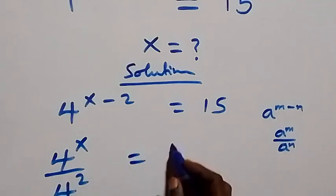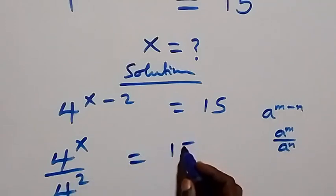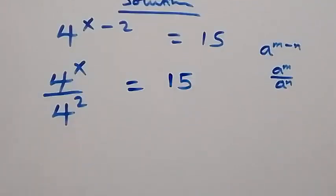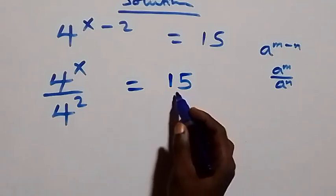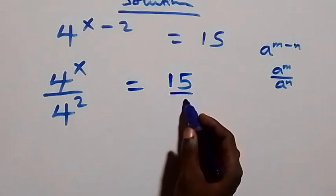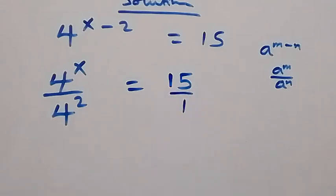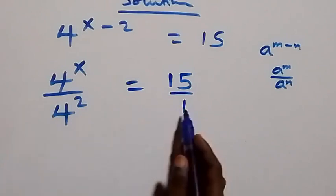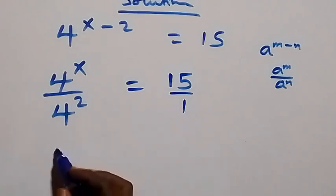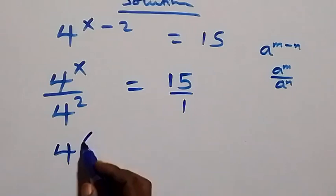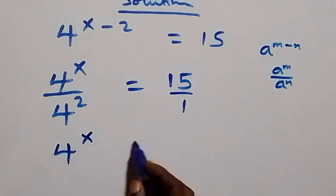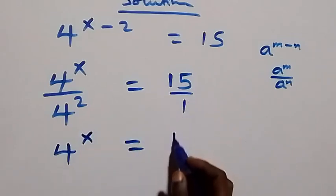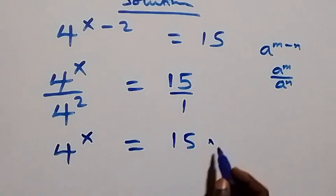Equals to 15 on this side. That is here, this is also 15 over 1. And when we cross multiply, 4 raised to power x times 1 gives us 4 raised to power x, then equals to 15 times...